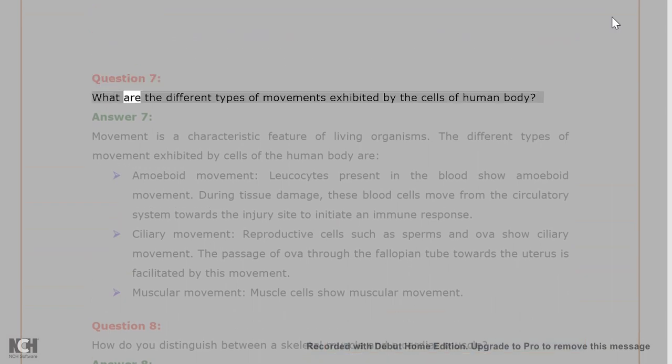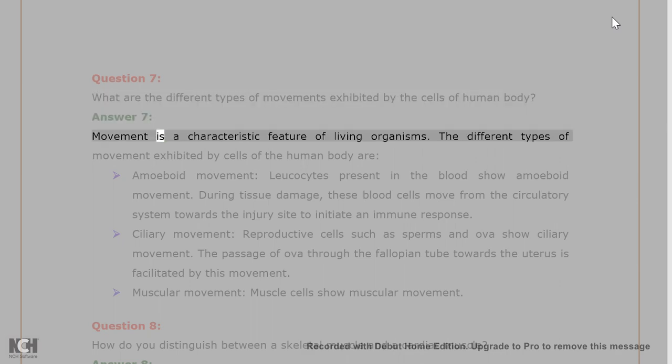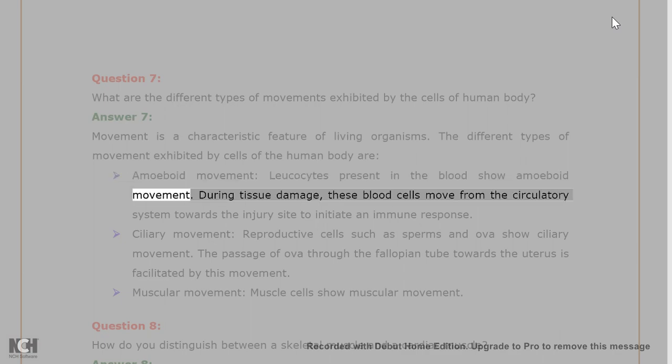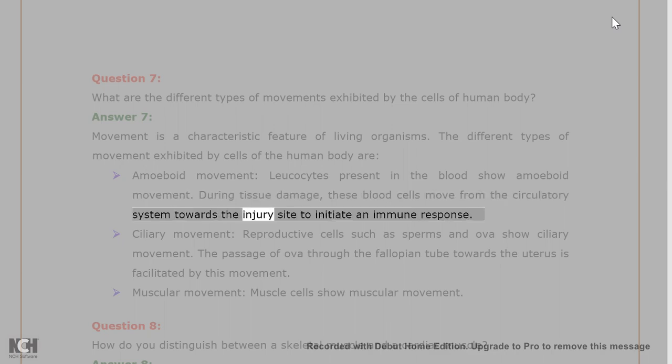Question 7. What are the different types of movements exhibited by the cells of human body? Answer 7. Movement is a characteristic feature of living organisms. The different types of movement exhibited by cells of the human body are: Amoeboid movement - Leukocytes present in the blood show amoeboid movement. During tissue damage, these blood cells move from the circulatory system towards the injury site to initiate an immune response.